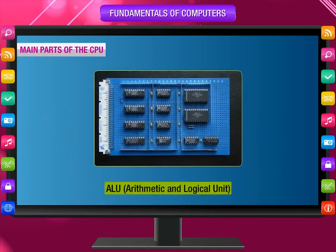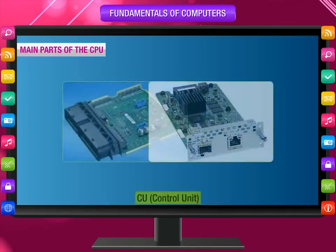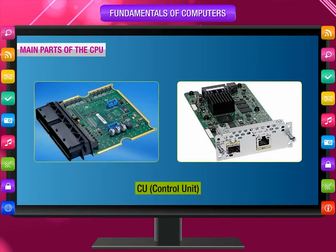Second, ALU — Arithmetic and Logical Unit: this unit performs all calculations and logical operations. Third, CU — Control Unit: the control unit manages all the operations of a computer system, including all parts and peripherals.